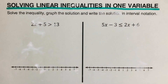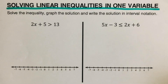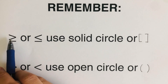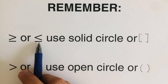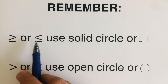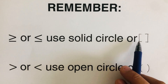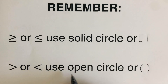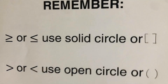Hello everyone. In this video we will be solving linear inequalities in one variable. Before we jump into these two examples, let's have a review on inequalities. If we get the symbol greater than or equal to, or less than or equal to, where there is a bar underneath the inequality sign, we are going to use the solid circle or bracket. If we get greater than or less than without a bar underneath, we are going to use the open circle or parentheses.